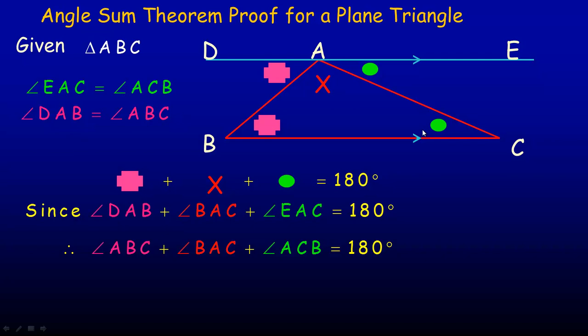The reason I can say that conclusively is because it doesn't matter how I draw the triangle. Drawing a line parallel to a side through the opposite vertex, these alternate angles are always equal. So we'll always end up with these three angles adding up to 180 degrees — that's why this is a proof for every possibility, not just examples like at the beginning of the tutorial.